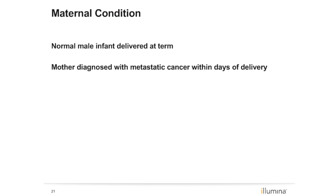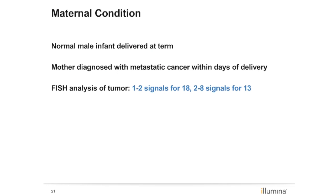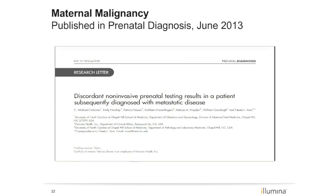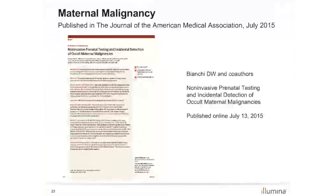However, within days of delivery she was diagnosed with metastatic cancer following a workup for persistent and worsening pelvic pain. A biopsy and FISH testing of the primary tumor showed one to two fluorescent signals for chromosome 18 and two to three signals for chromosome 13, consistent with mosaic loss of chromosome 18 and mosaic gain of chromosome 13. Several more cases identifying maternal malignancy have since been published in JAMA. Though the majority of abnormal NIPT reports will not lead to a cancer diagnosis, there are certainly times when results appear highly unusual and maternal medical history should be reviewed.